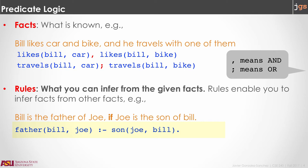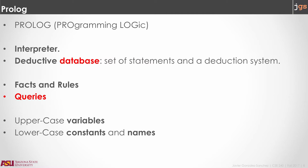For example, we are defining that there is a relationship between Bill and Joe because Bill is father of Joe. And we establish this rule that the relationship son exists between Joe and Bill, because we know that the relationship father exists between Bill and Joe.